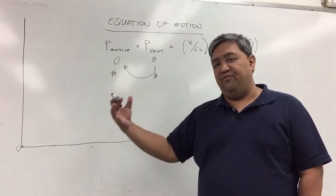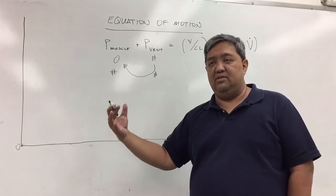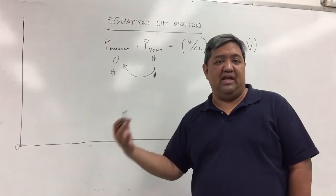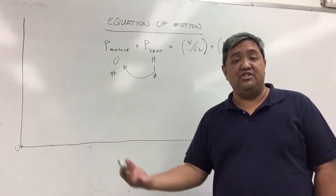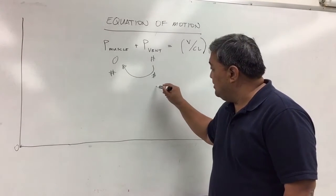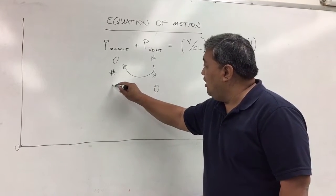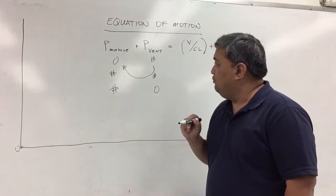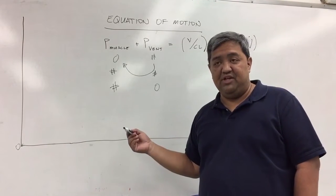As the patient is being weaned off the ventilator, let's say they're done with the AC mode or the SIMV, and they're now on the CPAP mode. This means the pressure on the ventilator is now zero, and all of the pressure is now being generated by the patient.